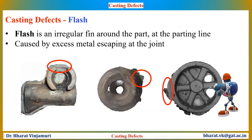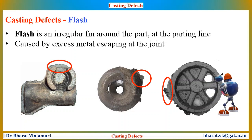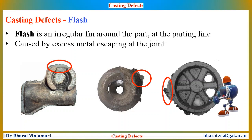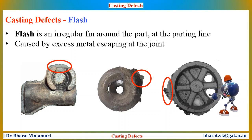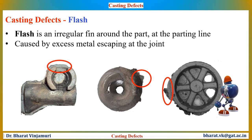Flash is one of the most frequently occurring casting defects. If the cavity is not closed properly, we get a defect across the parting line where the two moulds are not meeting properly. Flash is an irregular fin around the part at the parting line — it is typically a thin sheet of metal that forms at the parting faces. Such a defect is caused by excess metal escaping at the joint if the cavity is not closed properly, or due to poor contact between the moulds. It is also caused by insufficient weight on the mould or improper clamping of the flask, leading to a gap between the moulds.